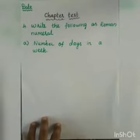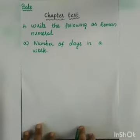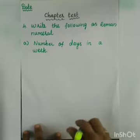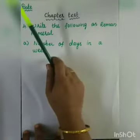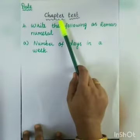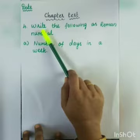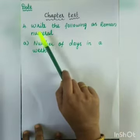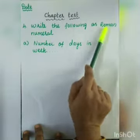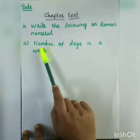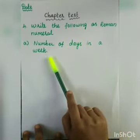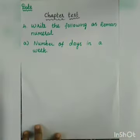If we take a note, put your date in your left margin. So in chapter test, the fourth section - you can copy the question. Write the following as Roman numerals. You can write the answer in Roman numeral form.